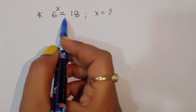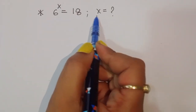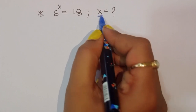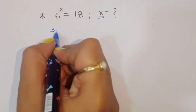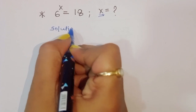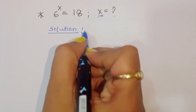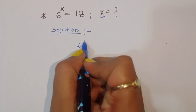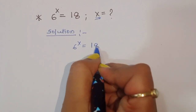The problem is given: 6 to the power x is equal to 18. We have to find the value of x. Let's see the solution.